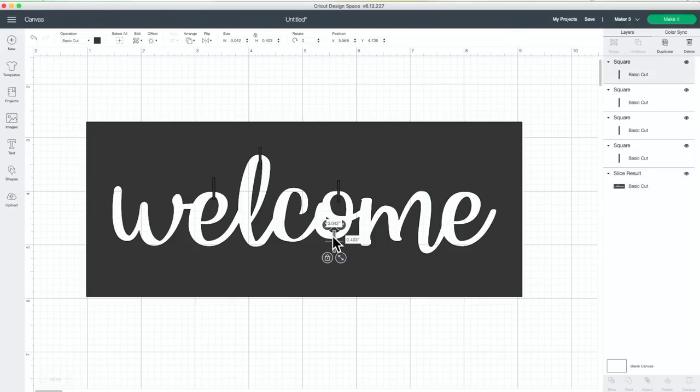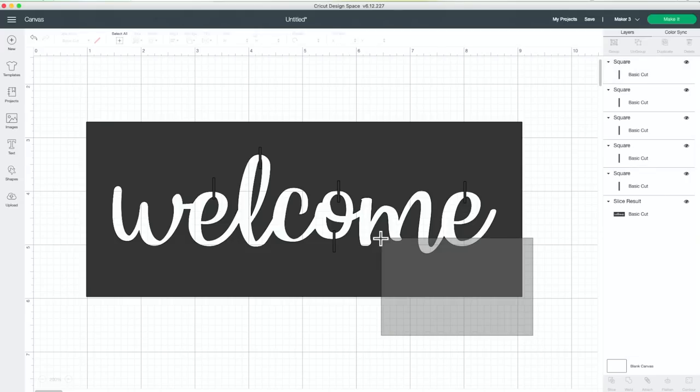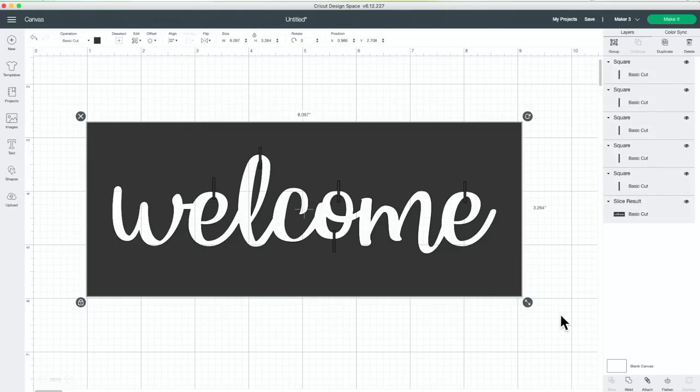Now I have one more, my E. So I'll duplicate one more time, bring this over. And then I can select all of the pieces, come down to the bottom right hand side and press weld.